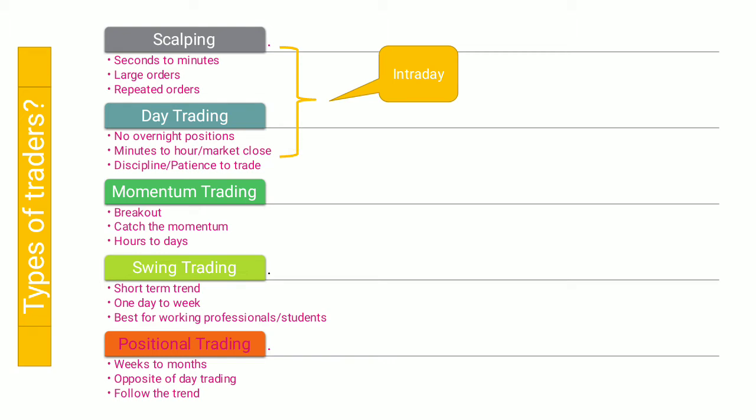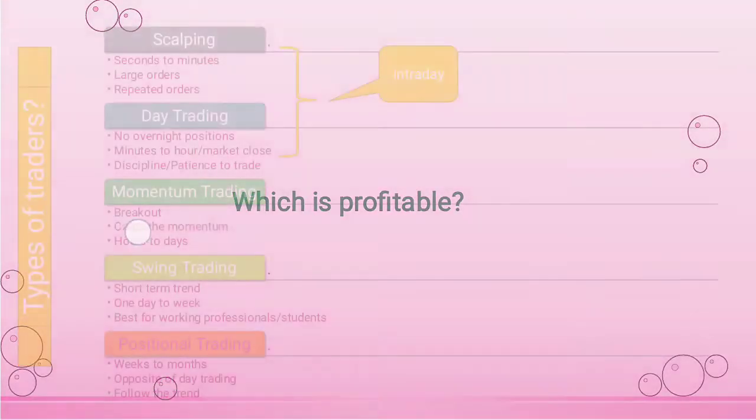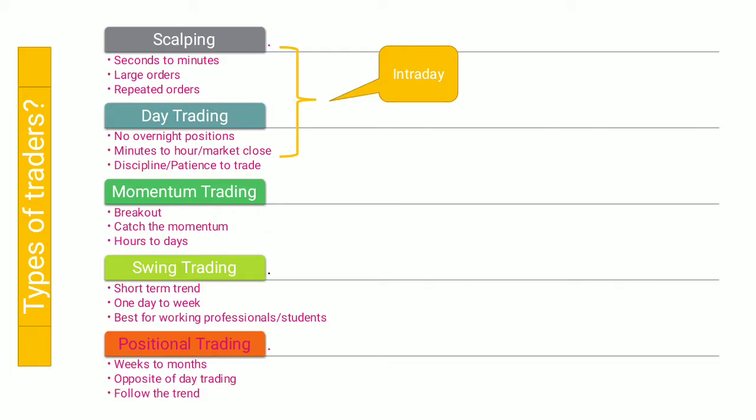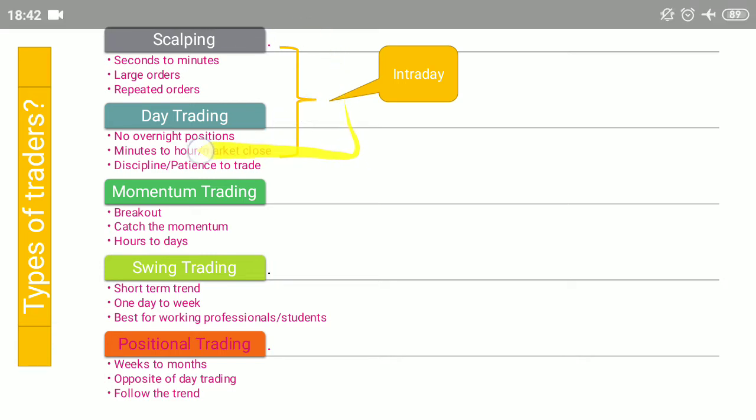Day traders wait till the market closes and then close their position by taking profit or loss. In day trading, you need a lot of experience, and discipline and patience are key to earning in the stock market. I personally waited for long hours just to earn around 0.2 to 0.3 percent profit. It is a rewarding career but takes a lot of time — that's why I wanted to create awareness among CMA and other professional students to consider the stock market as a career.